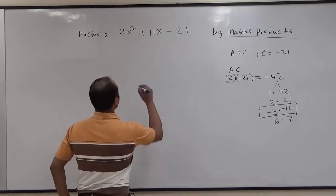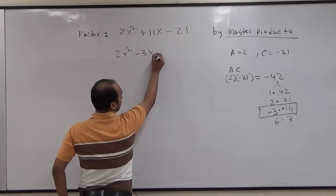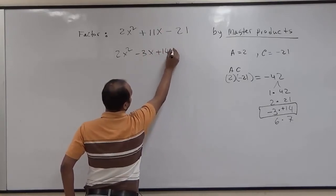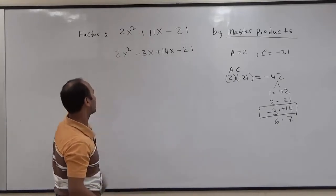So first, we'll write 2x squared minus 3x plus 14x minus 21. So I just recopied everything that we have on the top.